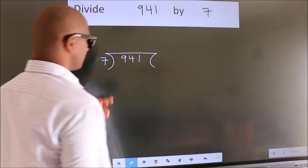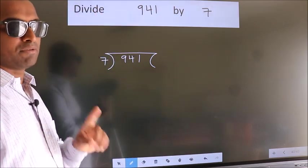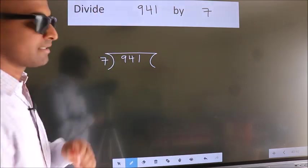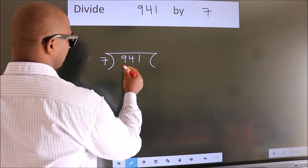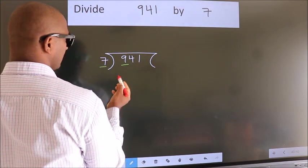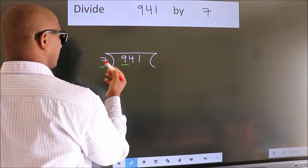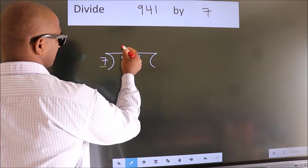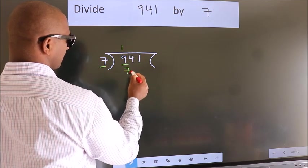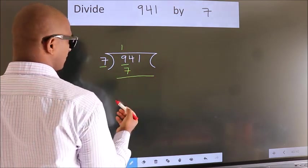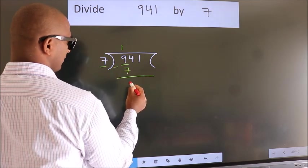This is your step 1. Next, here we have 9, here 7. A number close to 9 in the 7 table is 7 times 1 is 7. Now we should subtract. We get 2.